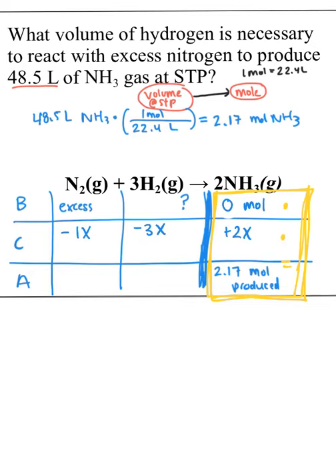Remember, b plus c has to equal this a. So what if I wrote an equation? Find x. So 0, the b, plus c, plus 2x, has to equal the a, which is 2.17. Well, we know that 0 just drops out. So 2x equals 2.17. So let's divide both sides by 2. x is equal to 1.08.